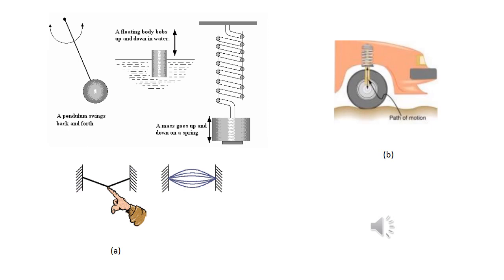In another classification, vibration can be categorized as: non-linear vibration — where components behave non-linearly; deterministic vibration — where the magnitude of excitation acting on the system is known at any given time; and non-deterministic or random vibration — where the excitation at a given time cannot be predicted.